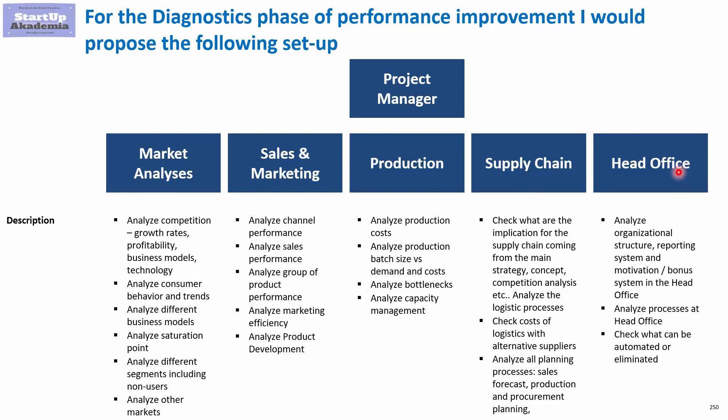Finally, in the head office stream, you analyze the organization structure, reporting system, and motivation and bonus system. Your aim is to simplify the structure, find things that make the company too slow or too complicated. Here you would most likely look for ways to automate and eliminate certain things, improve processes at the head office, limit the number of levels of management, and maybe decrease the number of directors as well.